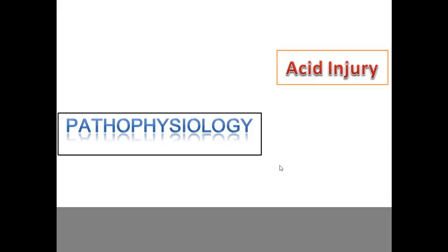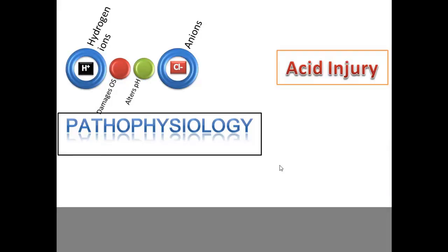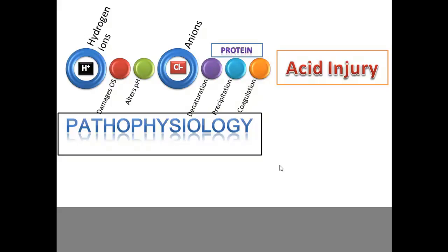In acid injuries, the acid dissociates into hydrogen ions and anions. The hydrogen ions damage the ocular surface and alter the pH, while the anions cause protein denaturation, precipitation, and coagulation. This forms a layer that further prevents penetration of the acid chemical.